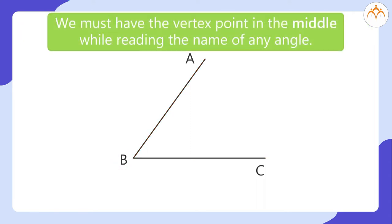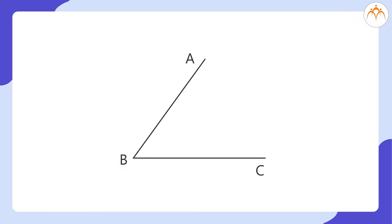We must have the vertex point in the middle while reading the name of any angle. Here, for example, we must read it as angle ABC. We use a symbol for the word angle while writing the name of the angle. The symbol used is here, we can write the angle as angle ABC.